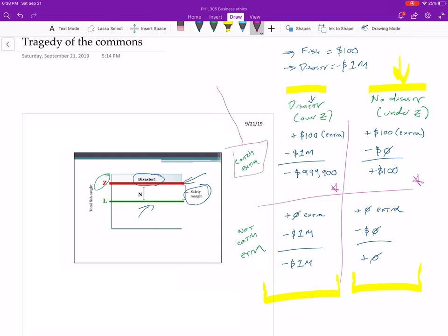As the game theorist would say, that means catching the extra fish is strictly dominant. That means you don't have to worry about what other people are doing or what the future is going to be. Because no matter what the future is, you should always be doing the same thing.